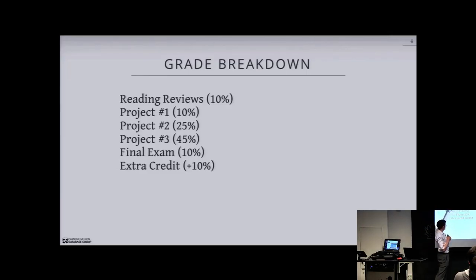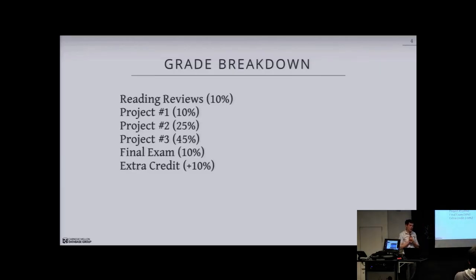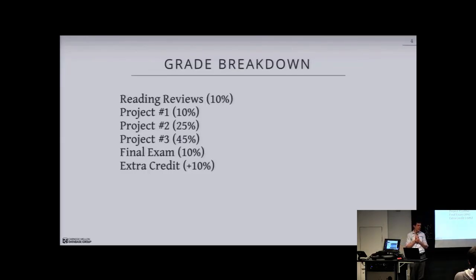Because we're giving you more time for Project 2 and expecting better code, I'm also shuffling the grade breakdown. Project 2 used to be worth 20% and the final exam was 15%. I've moved five percentage points out of the final exam and into Project 2. The final exam is going to be based on reading reviews, so combined you get 20% there. We're giving you more time but making it count more.